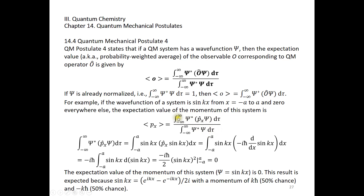Now let's look at the integral on the top. The integral of psi star multiplied by px psi is this. I replaced psi star with sin(kx). Psi is also sin(kx), because we have a real function here. And then we need to apply px to psi. Px is the momentum operator. This operator is negative i h-bar d over dx. We apply this momentum operator to sin(kx), and the result is negative i h-bar times k times cosine(kx).